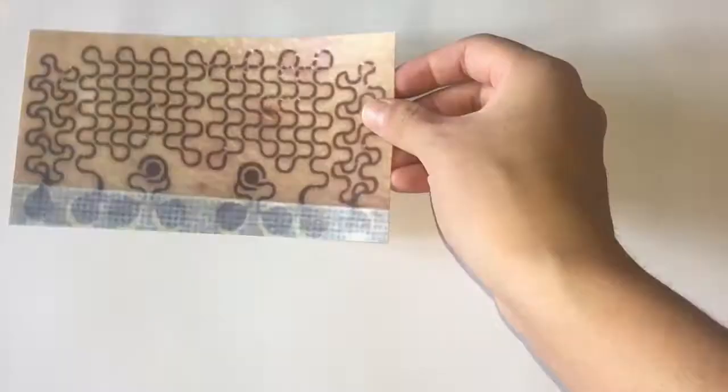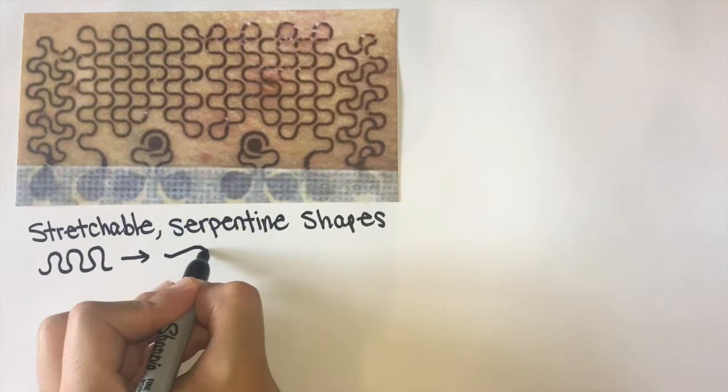In order to reduce the motion artifact, e-tattoos are cut into stretchable, serpentine shapes, and are made on extremely thin layers of material that can snugly conform to the skin.